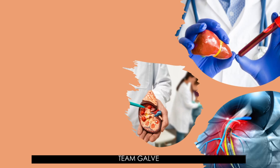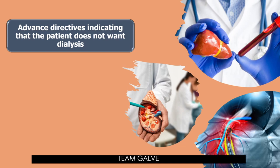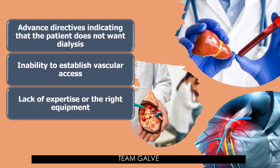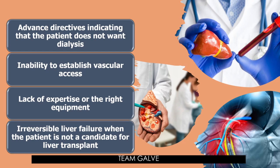First, patients with advanced directives indicating that the patient does not want dialysis. Second, inability to establish vascular access — no central line, no femoral line, no jugular line, no subclavian line. CKRT cannot be done peripherally. Third, lack of expertise or the right equipment — if the nurse or doctor is not highly competent, or if the machine itself is unavailable. Fourth, irreversible liver failure when the patient is not a candidate for liver transplant. These are the contraindications for CRRT/CKRT.